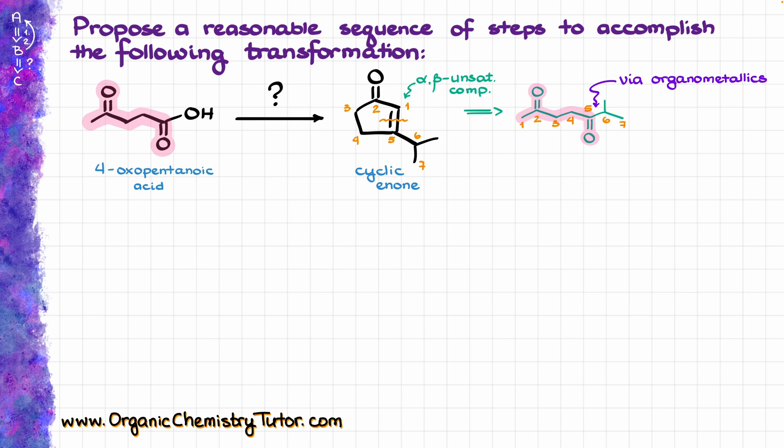I can see that I'm going to end up making this bond between carbons five and six, most likely via reaction with some sort of organometallic compound. And since we are going to be working with organometallic compounds, that means the carbonyl on carbon number two must be protected.